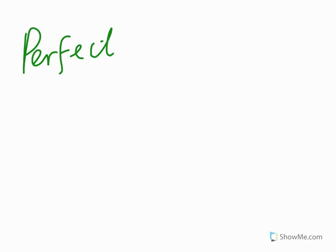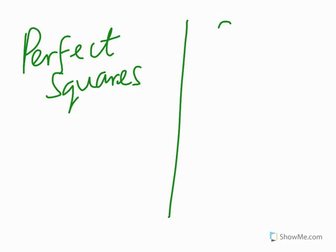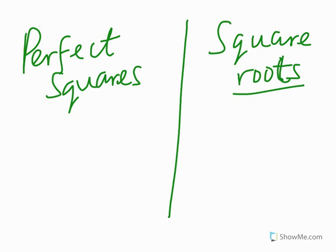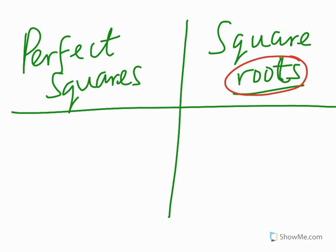So let's now jump to perfect squares and square roots. Perfect squares means raise the base to exponent 2. That is what it means — raise the base to exponent 2.